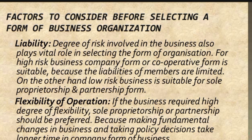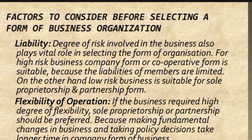Next is liability. The degree of risk involved in the business plays a major role in selecting the form of organization. If you have a high-risk business, then a company or cooperative firm is suitable, because the liability of members is limited. On the other hand, if the business has low risk, then sole proprietorship or partnership firm is suitable, as you can manage any liability yourself or with your partner.